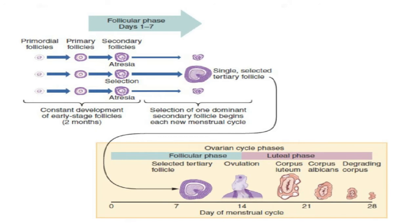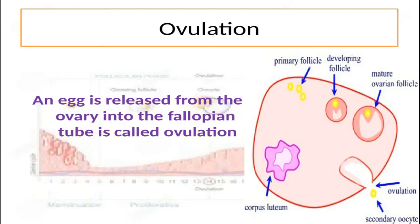The selected follicle differentiates into a tertiary follicle while the other two die — a process also known as atresia. This selected tertiary follicle is extremely important as it starts the next phase of the ovarian cycle: ovulation. This tertiary follicle contains the mature secondary oocyte, which is then released from the ovary in order to get fertilized.